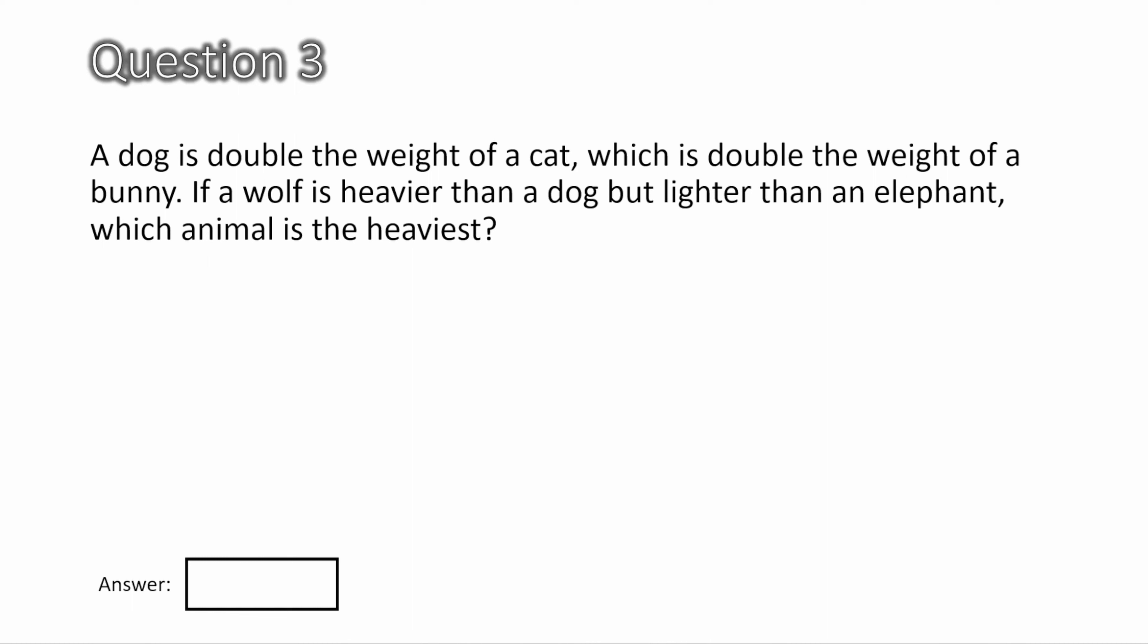Question three. A dog is double the weight of a cat, which is double the weight of a bunny. If a wolf is heavier than a dog, but lighter than an elephant, which animal is the heaviest? Let's write out all our potential options. So we have dog, cat, bunny, wolf, and elephant. So let's find out which of these five animals are the heaviest. A dog is double the weight of a cat, so a cat's lighter than a dog, which means that cat's not the answer. And a cat is double the weight of a bunny, which means bunny's not the answer. And a wolf is heavier than a dog, so dog's not the answer. But a wolf is lighter than an elephant, so wolf is not the answer. Which leaves us with one option, elephant, which is the correct answer.